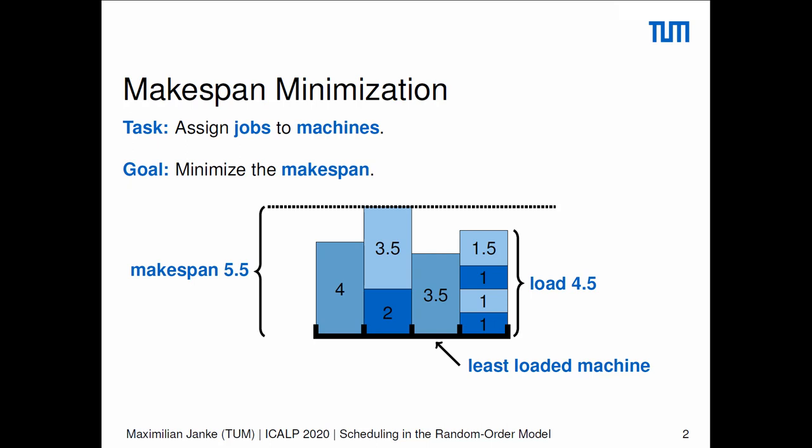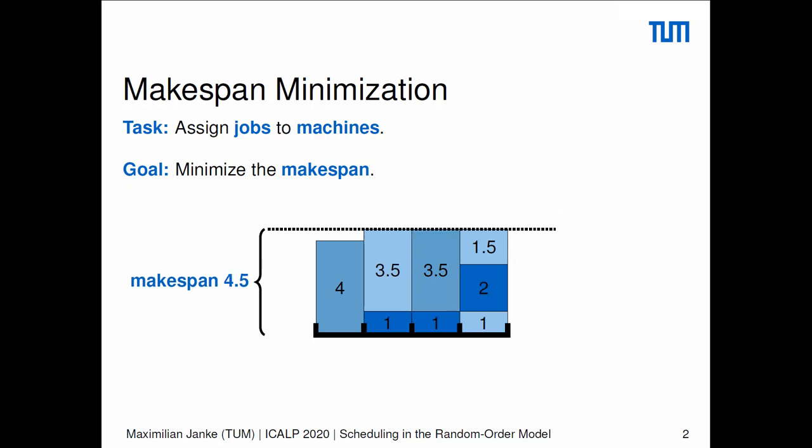The makespan, which is the time we want to minimize, is then the time it takes us to process all jobs. Formally, the makespan is just the maximum load of a machine. This sample schedule already shows that finding an optimal schedule is far from trivial. Has anybody already spotted a way to improve it? In fact, the optimal makespan is 4.5, which already shows that even the offline version of this problem is highly interesting and non-trivial, and it has been studied for quite a while in the literature.